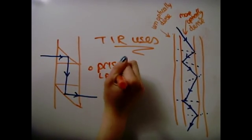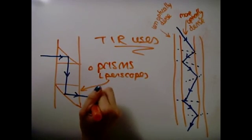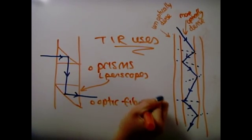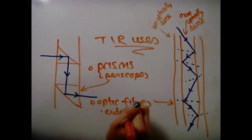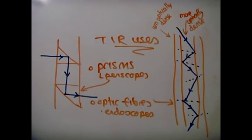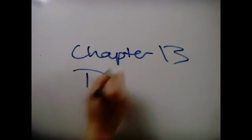Total internal reflection is used to make periscopes. It's also used in optical fibers and endoscopes. Chapter 13 done!